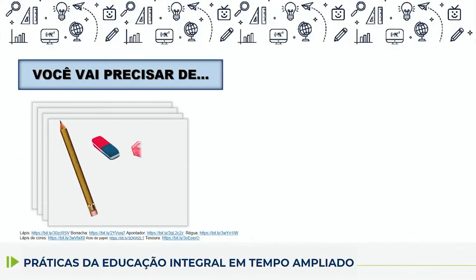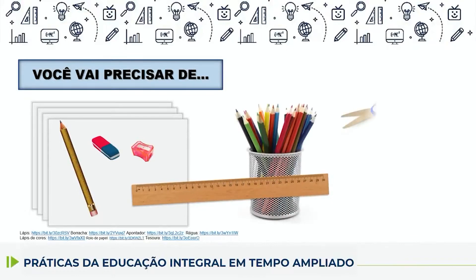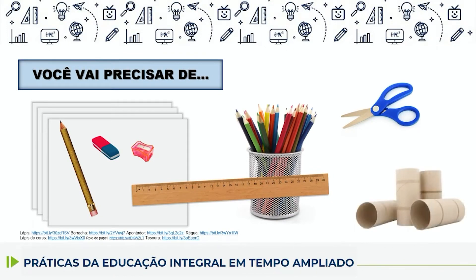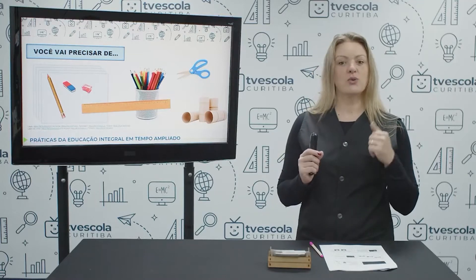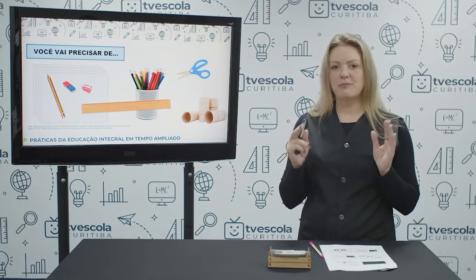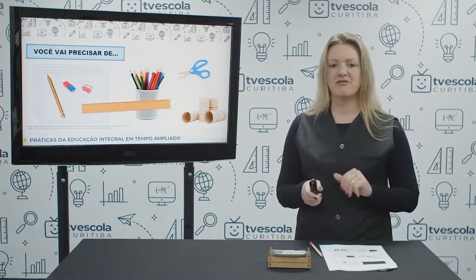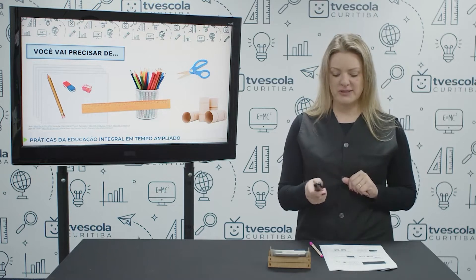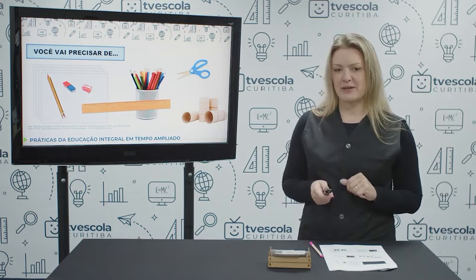Algumas folhas de papel sulfite, lápis, borracha, apontador, régua — vocês podem usar lápis de cores —, tesoura e rolinhos de papel higiênico. Caso vocês não tenham rolinhos de papel higiênico disponíveis, vocês podem usar um cabo de madeira curto, a própria régua, ou ainda uma caixa de creme dental, que também vai servir para a proposta que temos a realizar.